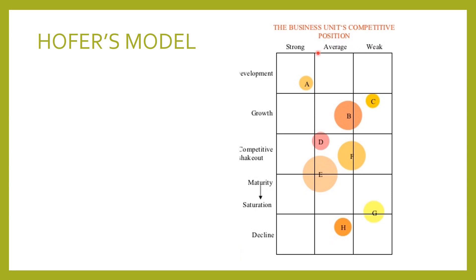The vertical axis shows the industry's state in the evolutionary life cycle starting with initial development and passing through growth, competitive shakeout, maturity, saturation and decline stage. In this matrix, SBU A with a strong competitive position and in the development stage holds out prospects for future development, deserves expansion and deserves financial resources to be allocated to exploit the opportunities.